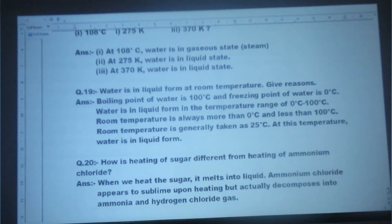Next question is: How is heating of sugar different from heating of ammonium chloride? Answer: When we heat the sugar, it melts into liquid. Ammonium chloride appears to sublime upon heating, but actually decomposes into ammonia and hydrogen chloride gas.